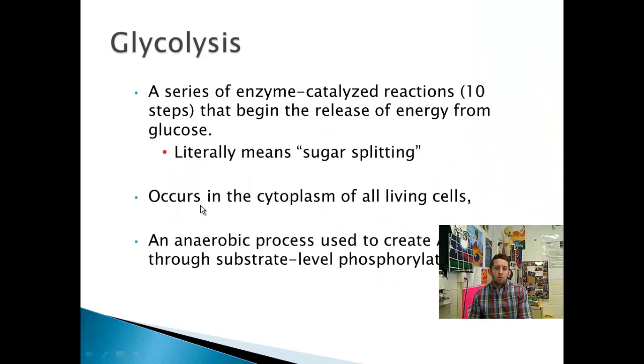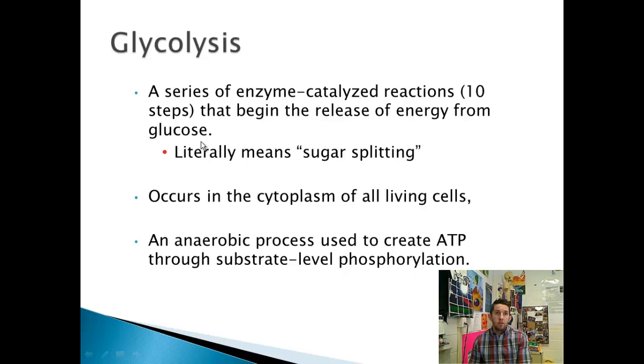Our overall goal in glycolysis is to take this glucose, rob energy from it, which ultimately comes in the form of two ATP. We're also going to reduce some coenzyme NAD to make NADH so it can travel down and help to run the electron transport chain. And obviously we're going to make this pyruvic acid or pyruvate. Glucose is our starting material. Glycolysis is a series of enzyme-catalyzed reactions, and it's 10 steps overall. It literally means sugar splitting. Glyco referring to the sugar, lysis meaning splitting. It takes place in the cytoplasm of all cells and it's an anaerobic process. It doesn't require oxygen.